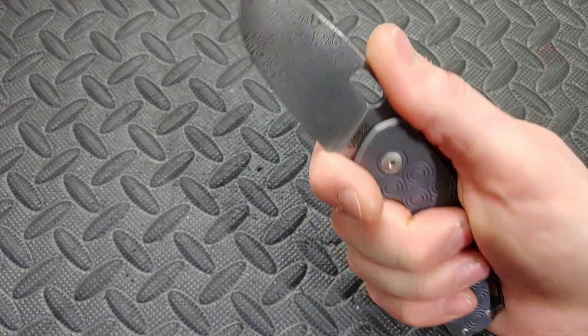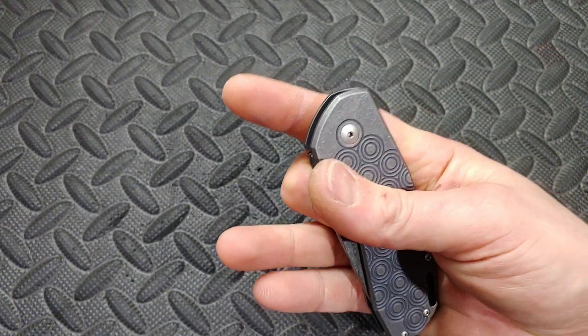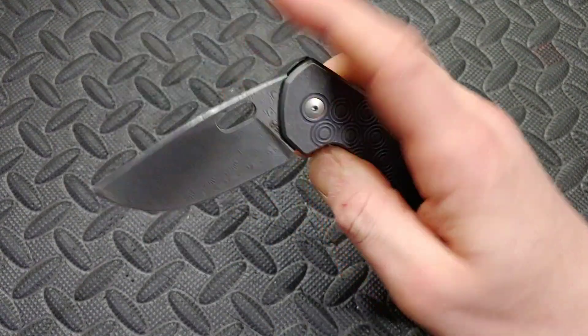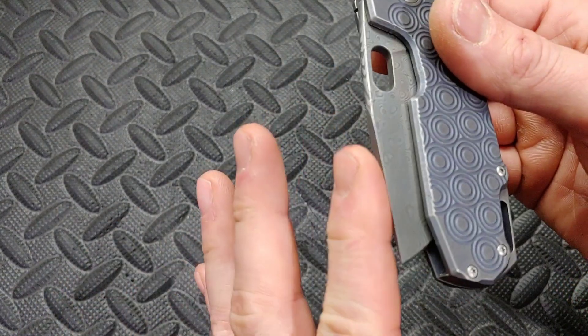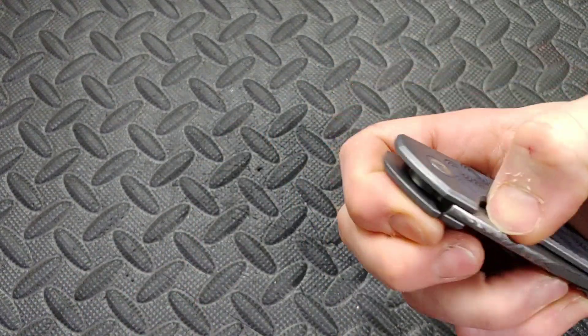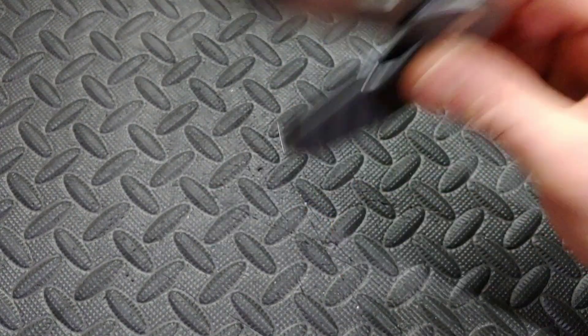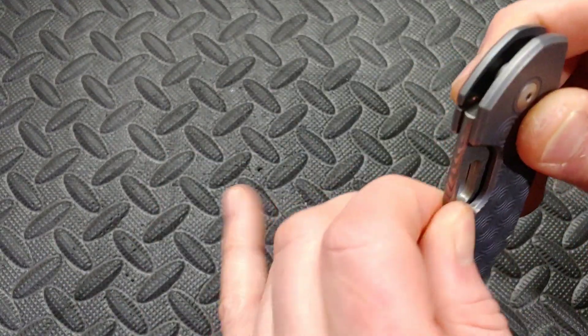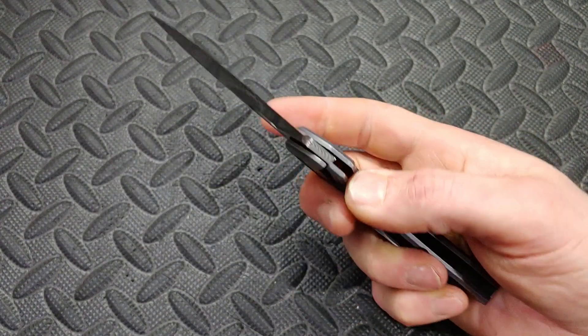But because the hole is well placed you get a lot of leverage on it and it tends to work out really good. You do have to have a pretty good reverse flick but once you break that detent man it really flies. You can hear how snappy that detent is. Awesome awesome knife.